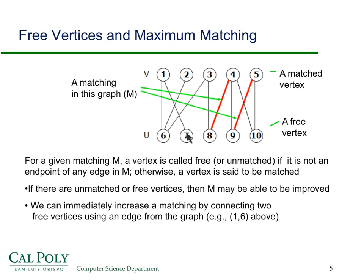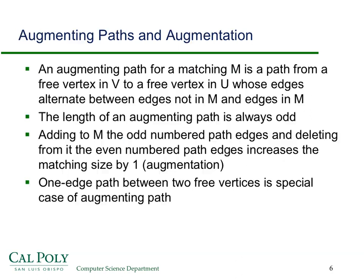Obviously, you can immediately increase the matching by just connecting two free vertices, assuming there's an edge. For instance, 1 and 7, that would increase the size of the matching. So one way to find a maximum matching is to use augmenting paths, which is a familiar concept from network flows. And it looks a lot the same. Basically, what you do is you find a path for the matching M that you're starting with.